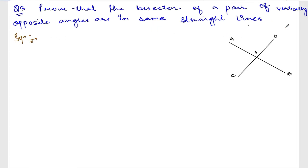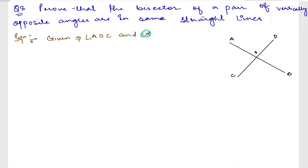Given: angle AOC and angle DOB are vertically opposite angles.